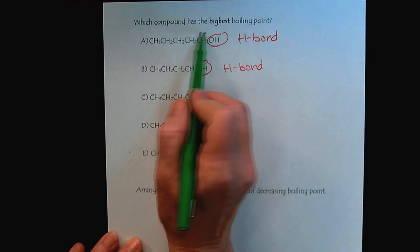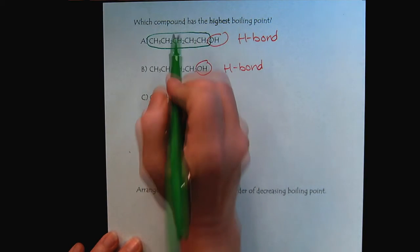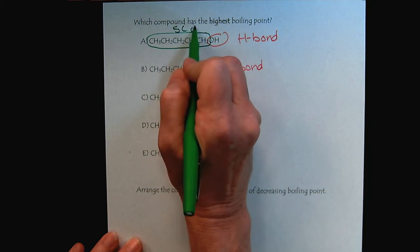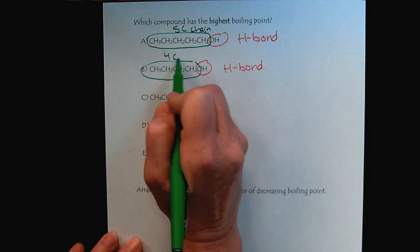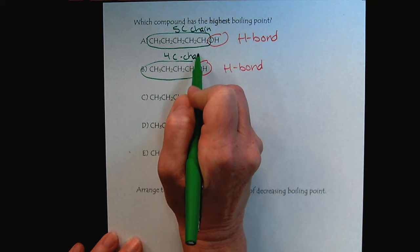So to break the tie, we look here, and we see a five-carbon chain. And we look here, and we see a four-carbon chain.